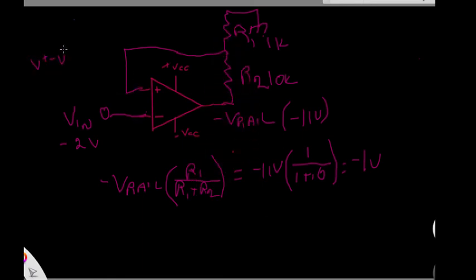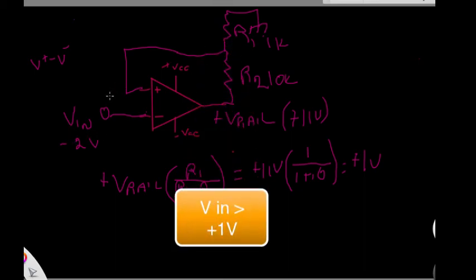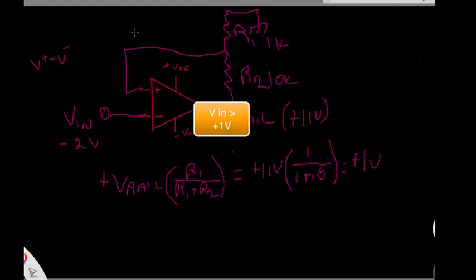Minus 2 volts is more negative than our positive input of minus 1 volt. The net result of V plus minus V minus open loop is that my output is going to switch. And my output is going to go from minus V rail to plus V rail. When I go to plus 11 volts, my ratio stays the same, but now what I have is I've gone to plus 11 volts. So now, or I have a comparator that is now switched, and it's going to remain at plus 11 volts out until minus V in goes more positive than plus 11 volts, in which case it'll switch.